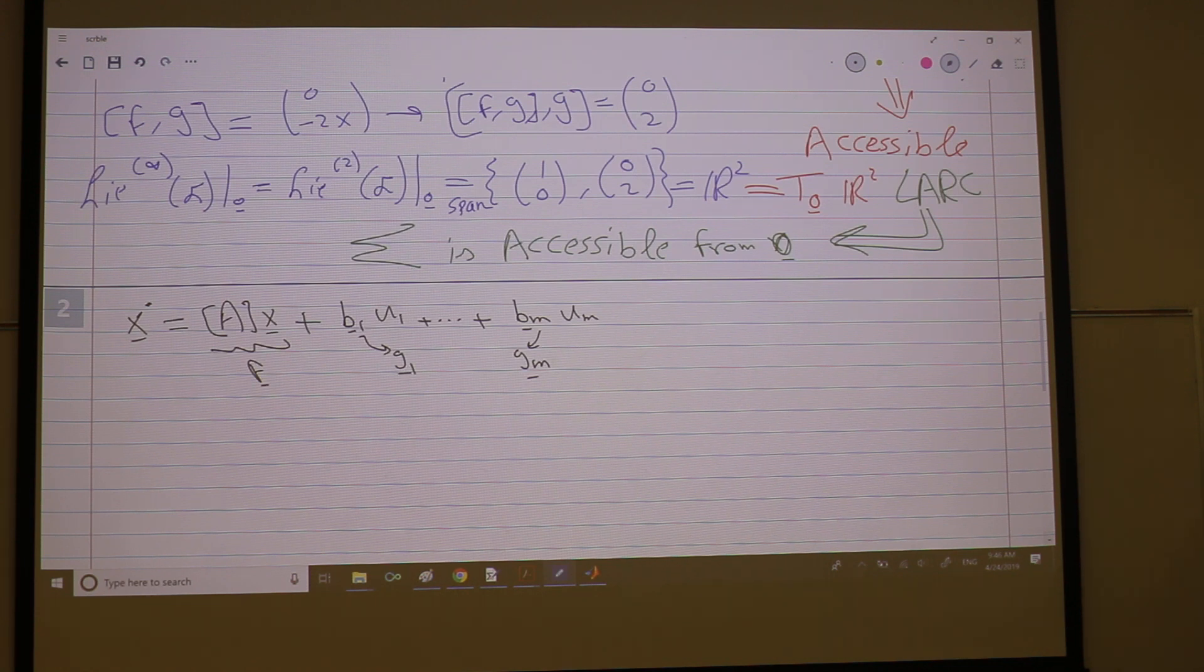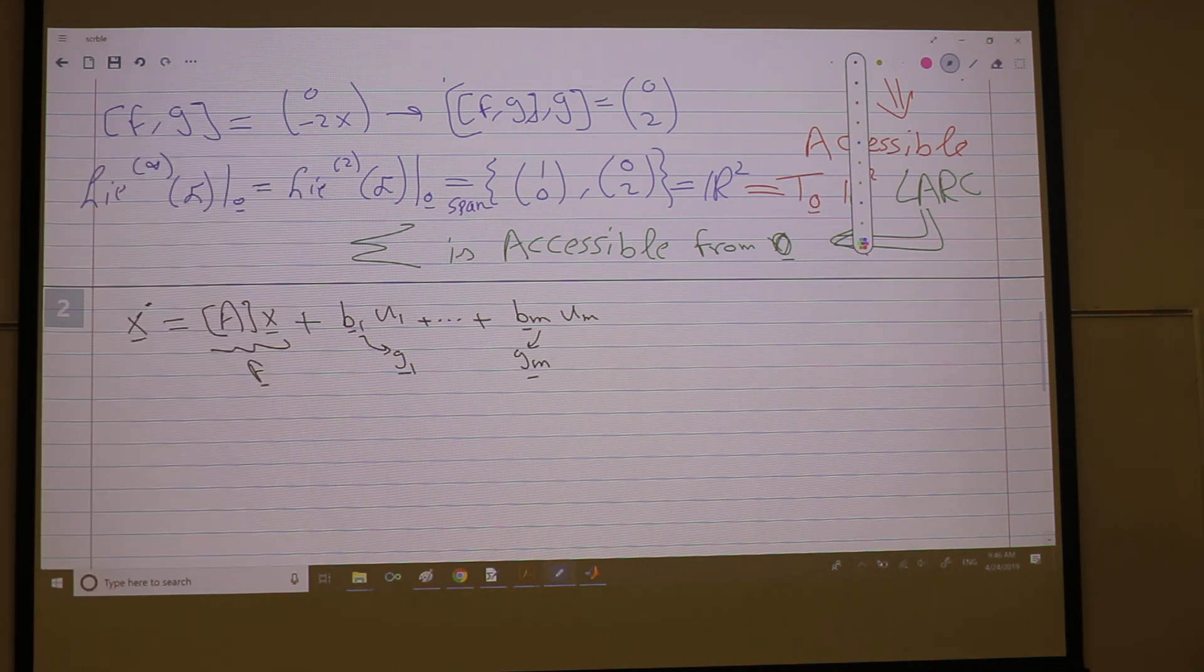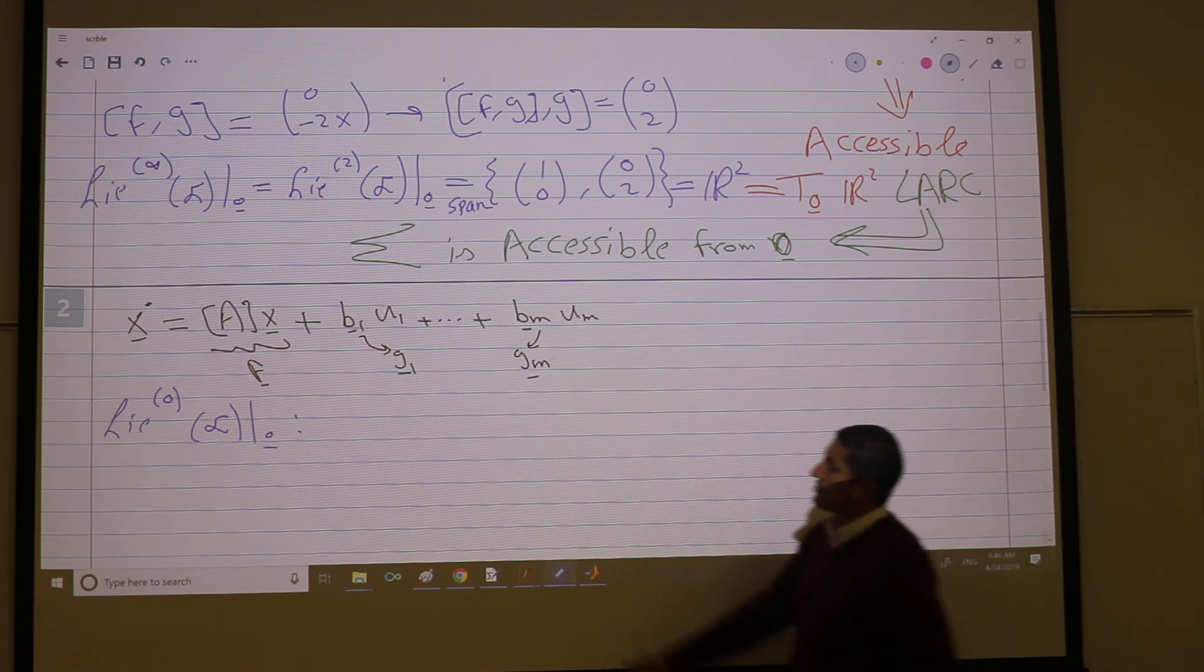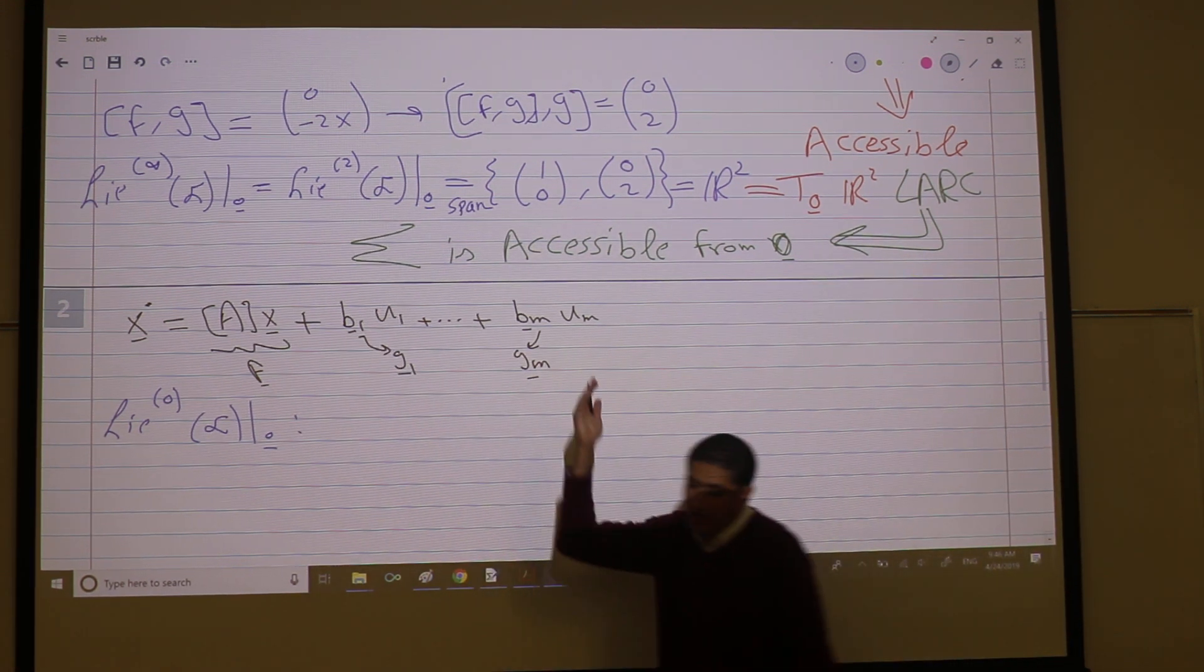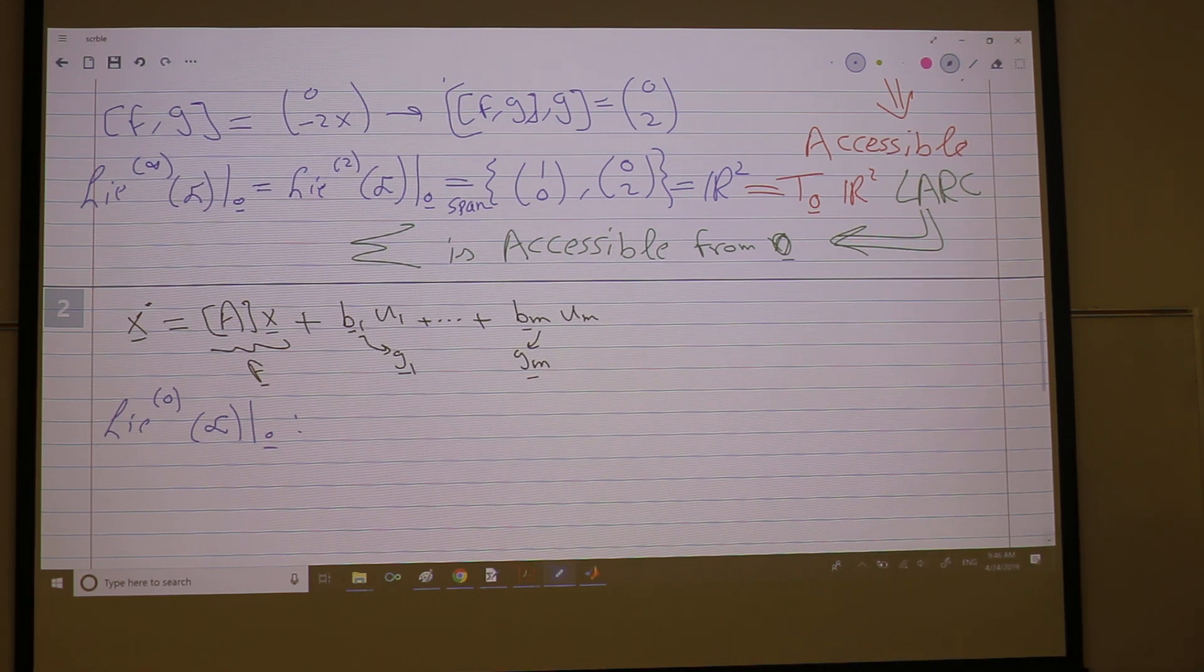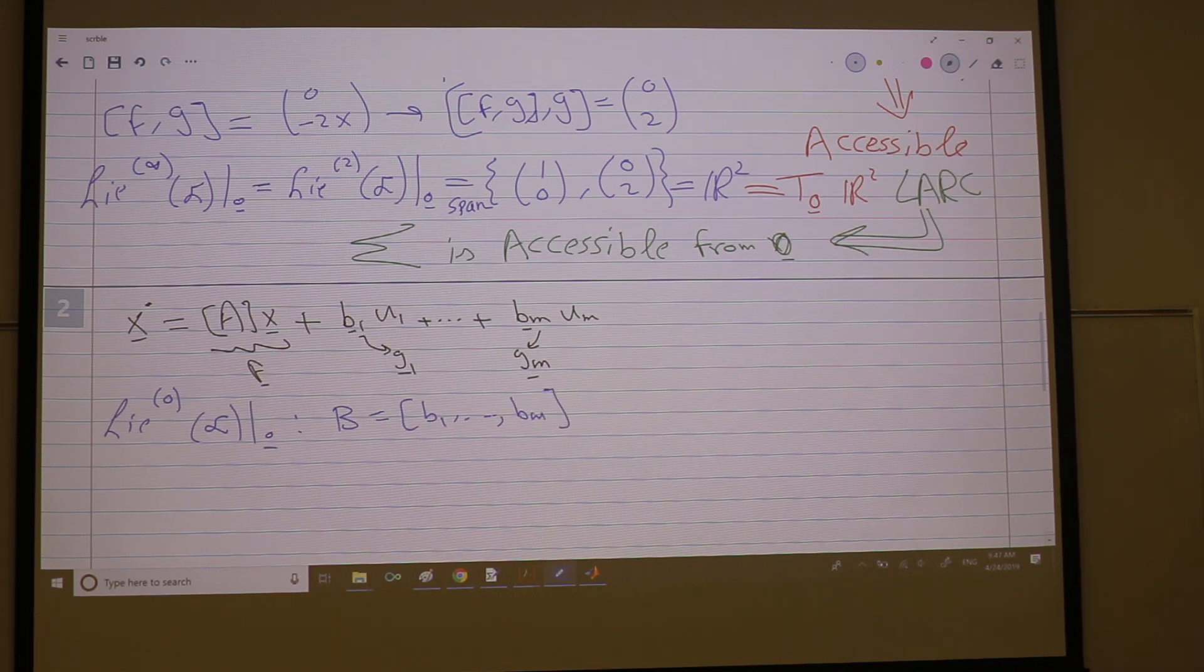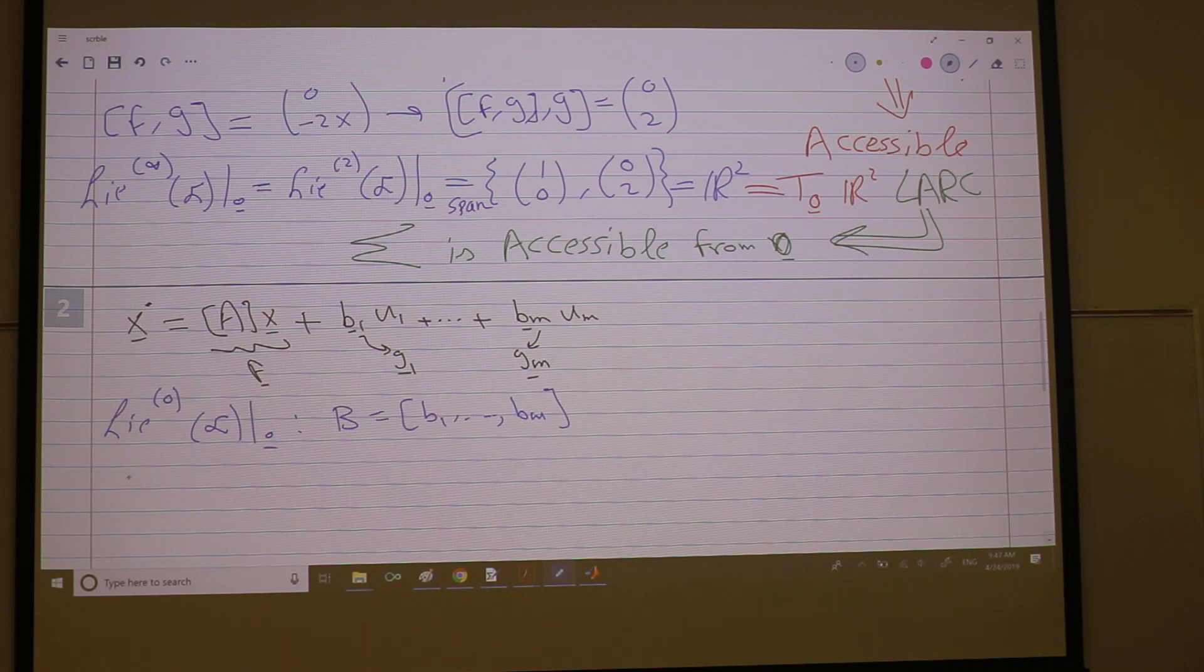So I want to determine if the system is accessible from the origin or not. I will go to compute the brackets. So what is Lie-zero f at the origin? Just evaluate the F and G's. So F at the origin is zero. G's at the origin, G's are constants, so this is just B1 up to Bm. If you log them in a matrix, it's just called the matrix B, right? So this is the Lie-zero.